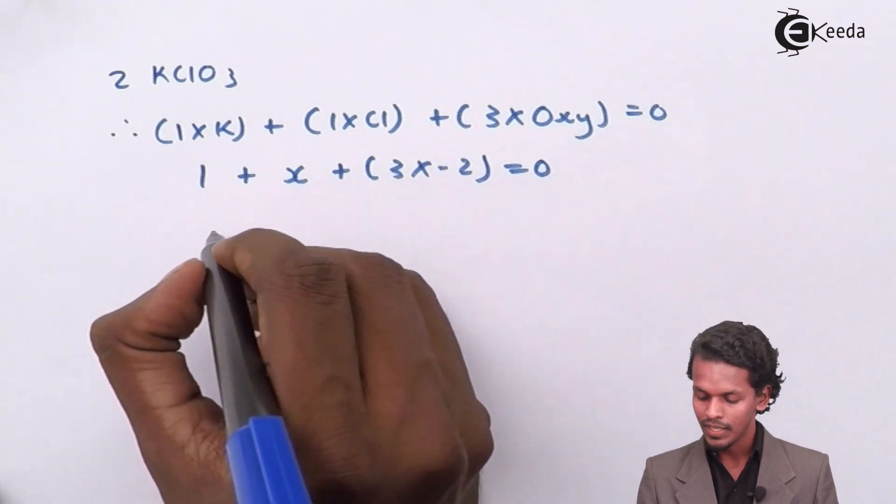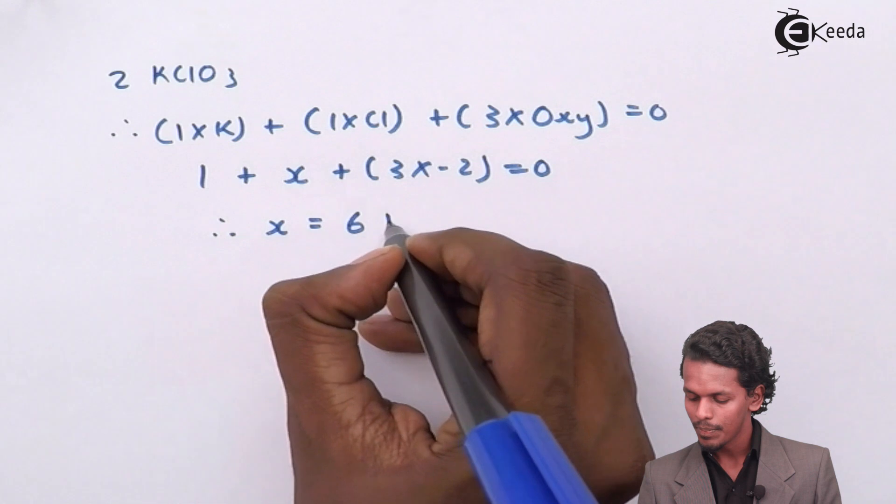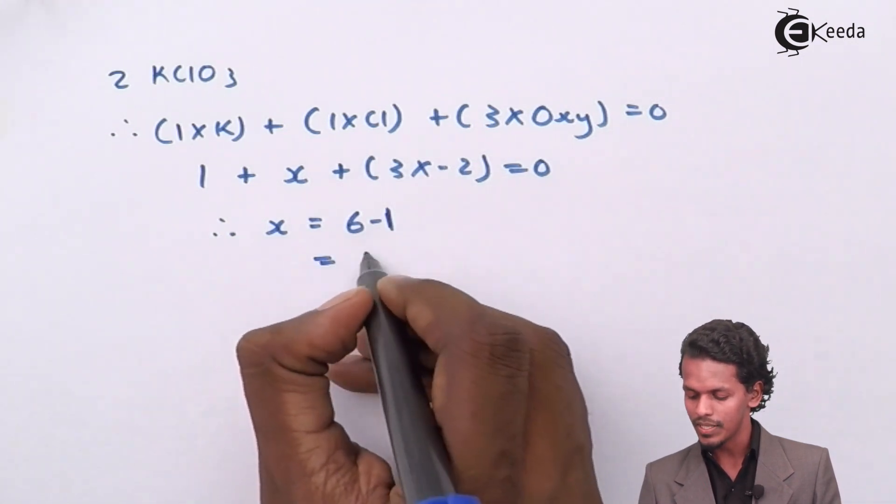of the molecule as 0. Therefore X equals 6 minus 1, which means 5.